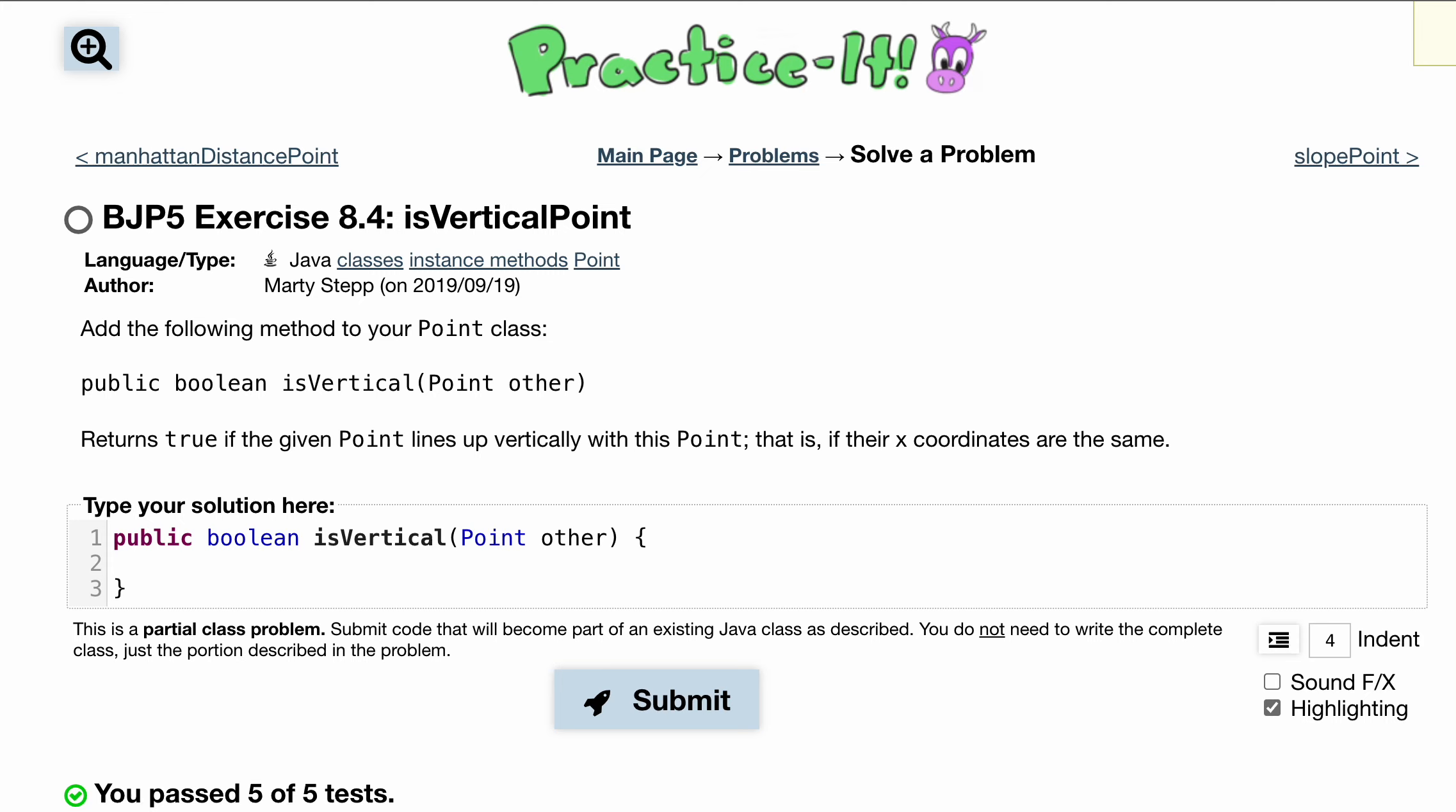IsVerticalPoint is telling us to add the following method to our point class. So as a continuation of all the previous videos we've done in the playlist, link below the like button, we know what our point class looks like.